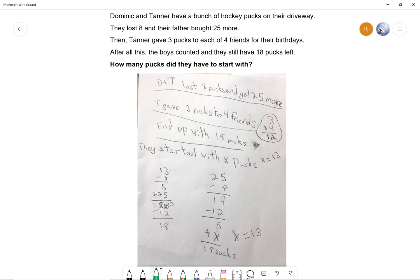So D and T lost 8 pucks and got 25 more. T gave 3 pucks to 4 friends. So what I did was, well if you lose 8 but you get 25, it's basically 25 minus 8. The difference of those is 17. And then the 3 times 4 is 12, right up next to T gave 3 pucks to 4 friends. So the difference between that difference is 5. X, the variable, that's the number you don't know, no, 8 plus, I mean 5 plus what is 18. It is 18 minus 5 which ended up to be 13. Awesome.